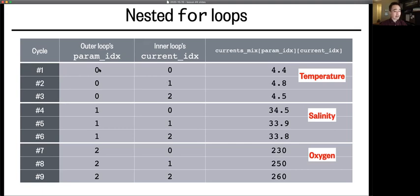And only after that, we can move to the second cycle of the outer loop. And the inner loop averages those three salinity values. Then finally, we get to move to the third cycle of the outer loop, where we average the three oxygen values. So okay, in all, we've gone through nine loop cycles, because three times three is nine.